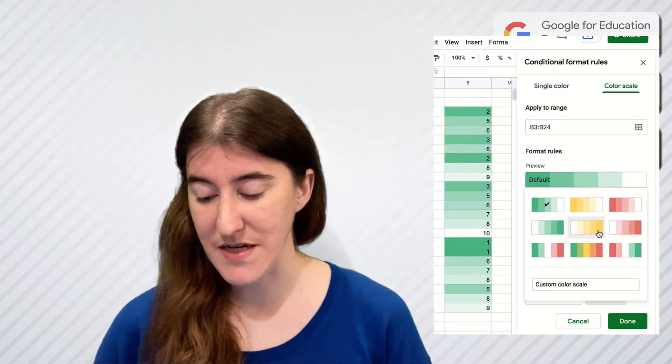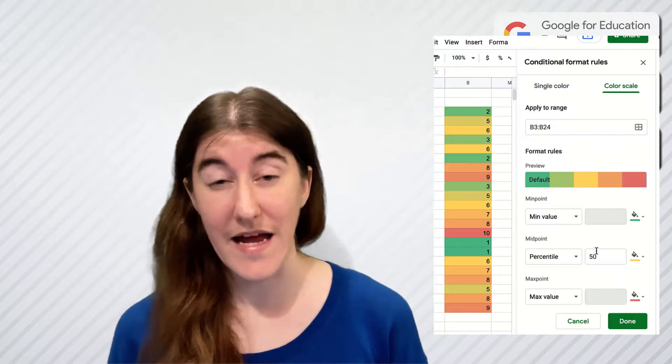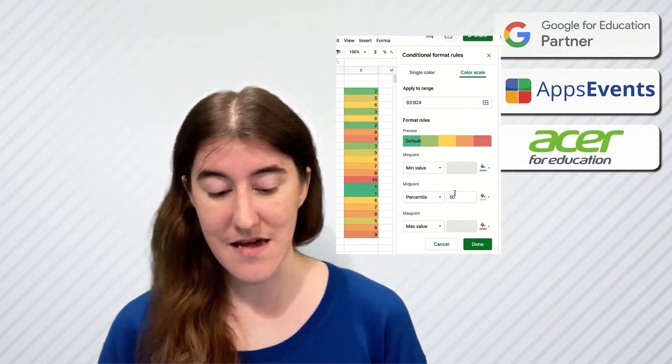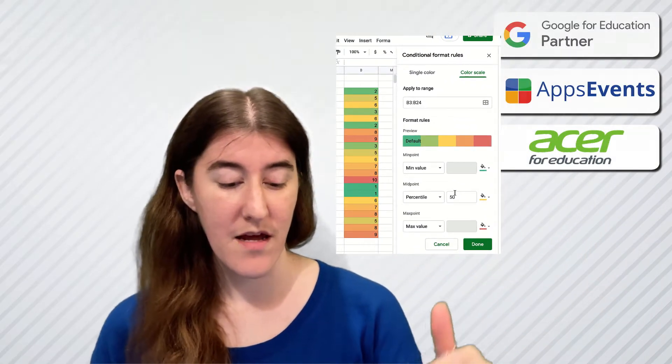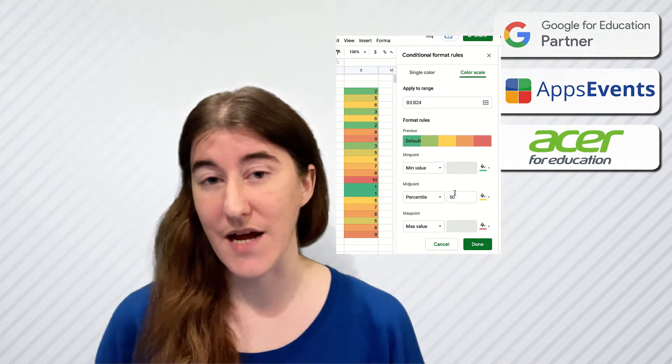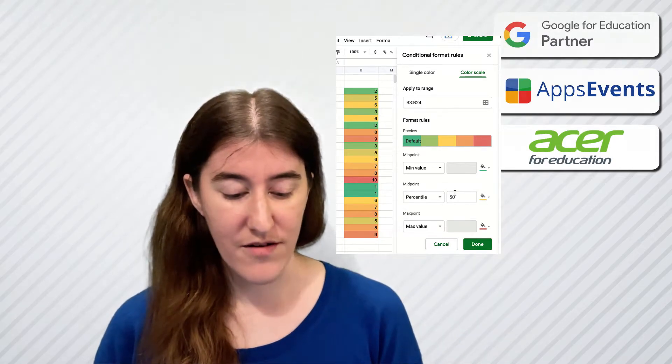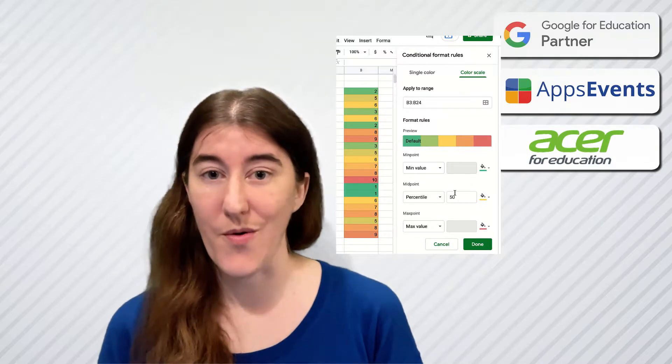So I can go ahead and change my default to go from green to yellow to red, and now what I'm going to see is between the lowest scores at green and the highest scores at red, where all of these scores fall in the list.